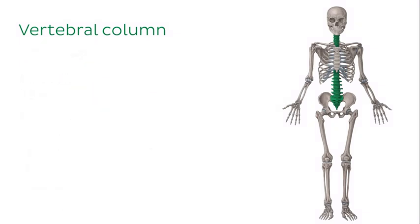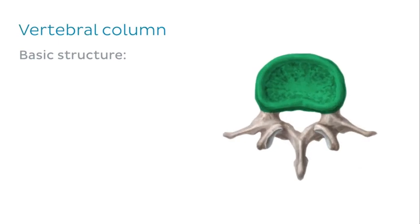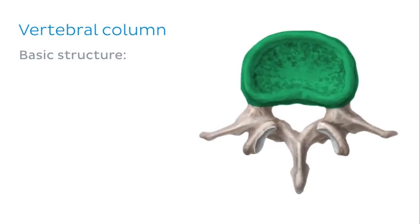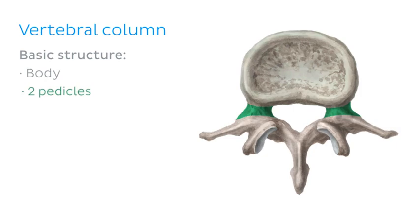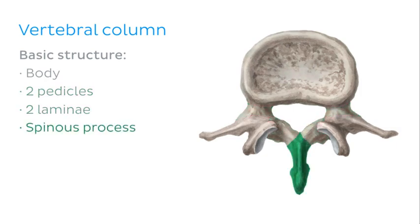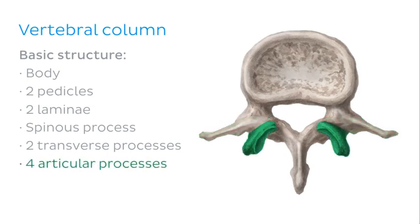Most of the vertebrae have a similar basic structure, which I'll go through using a superior view of a lumbar vertebra. The first region we can see highlighted is the body. A typical vertebra will also exhibit two pedicles, two laminae, a spinous process, two transverse processes and four articular processes. Note that we can only see two articular processes here as the other two are located on the inferior surface of the lumbar vertebra.